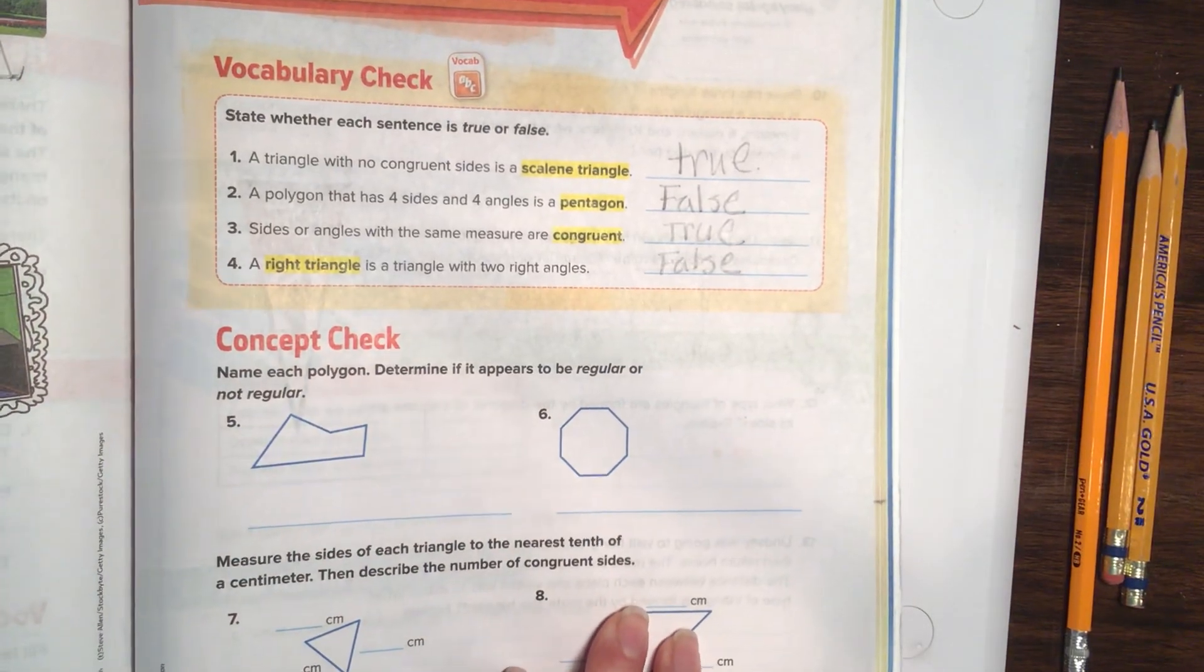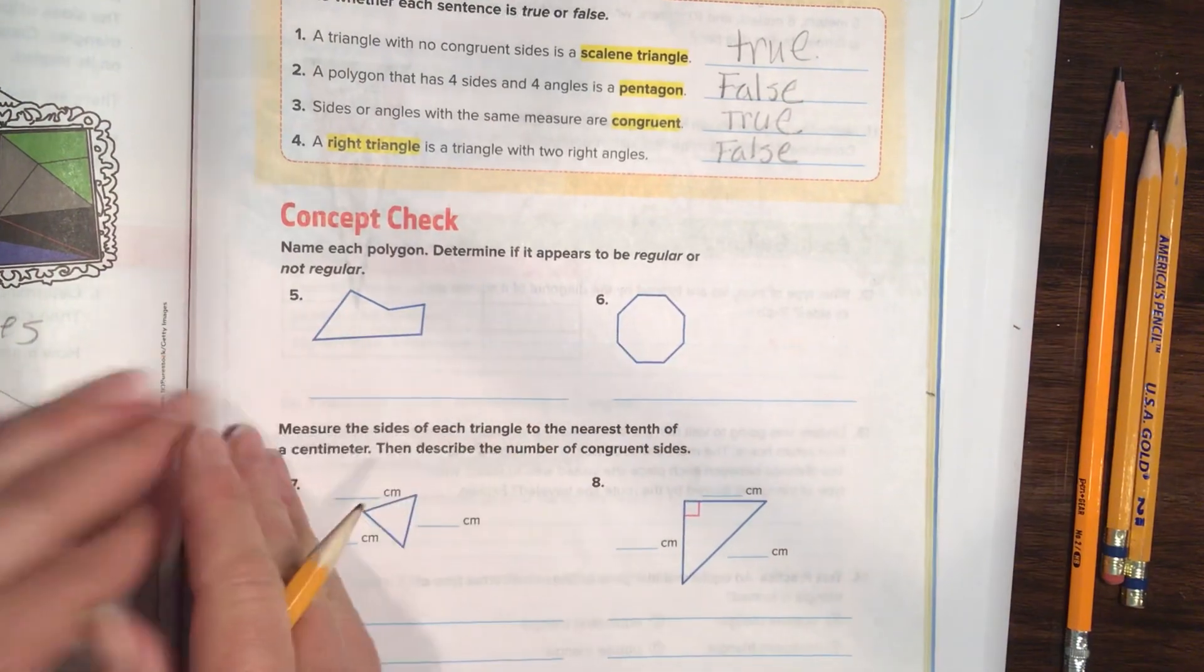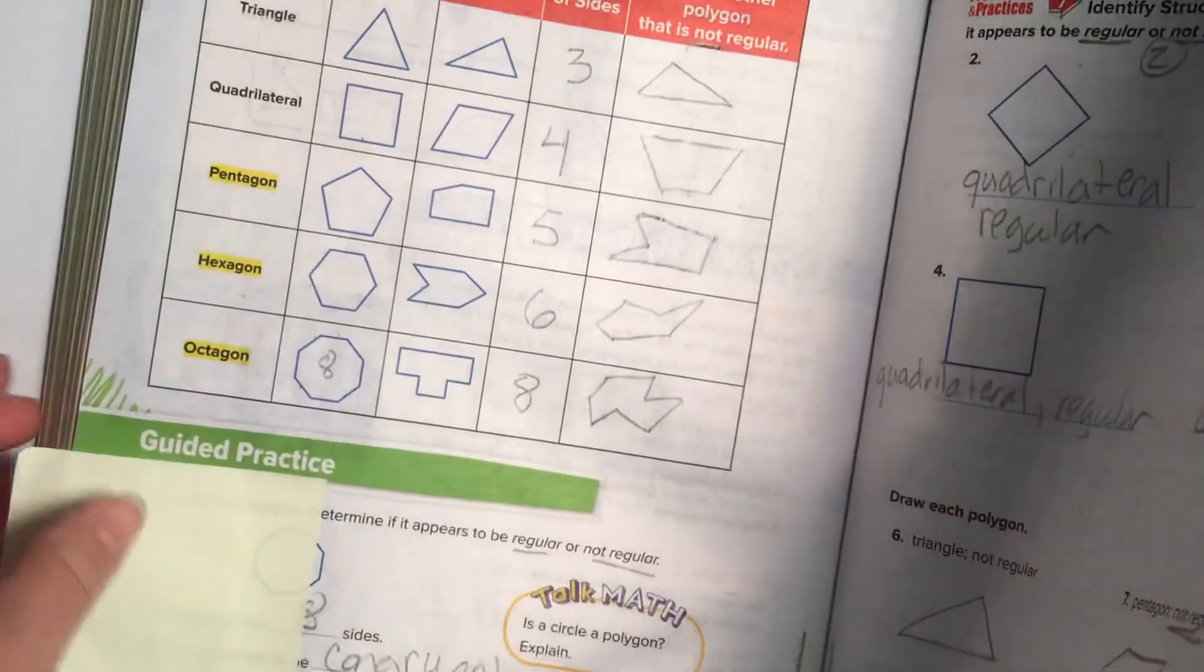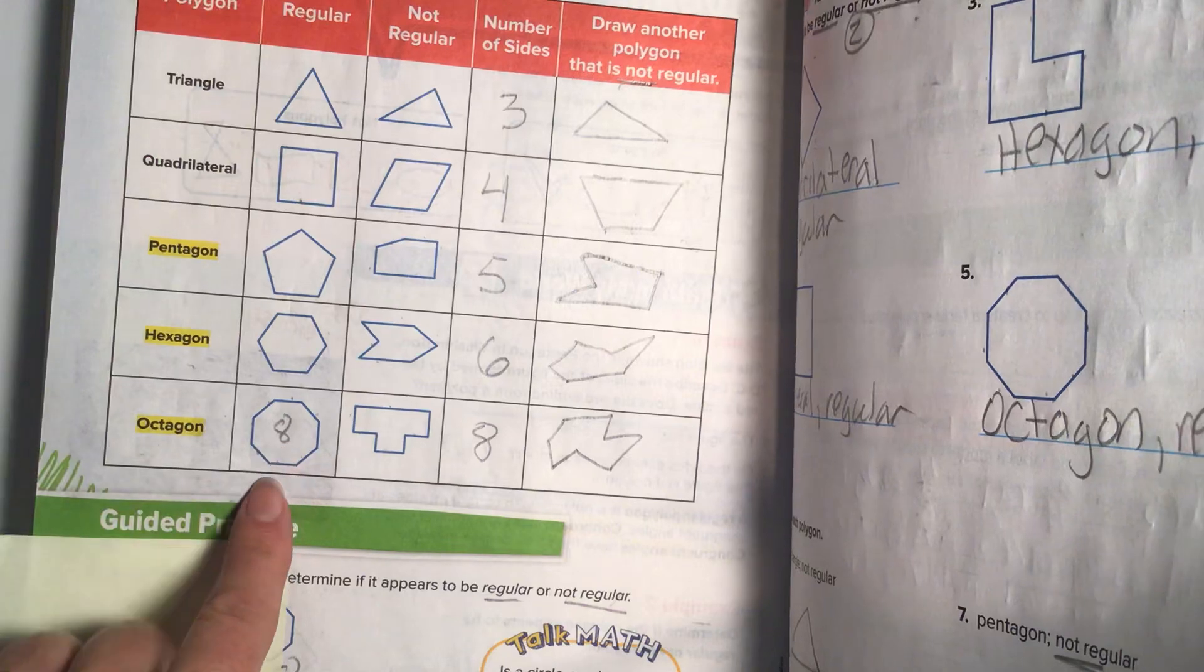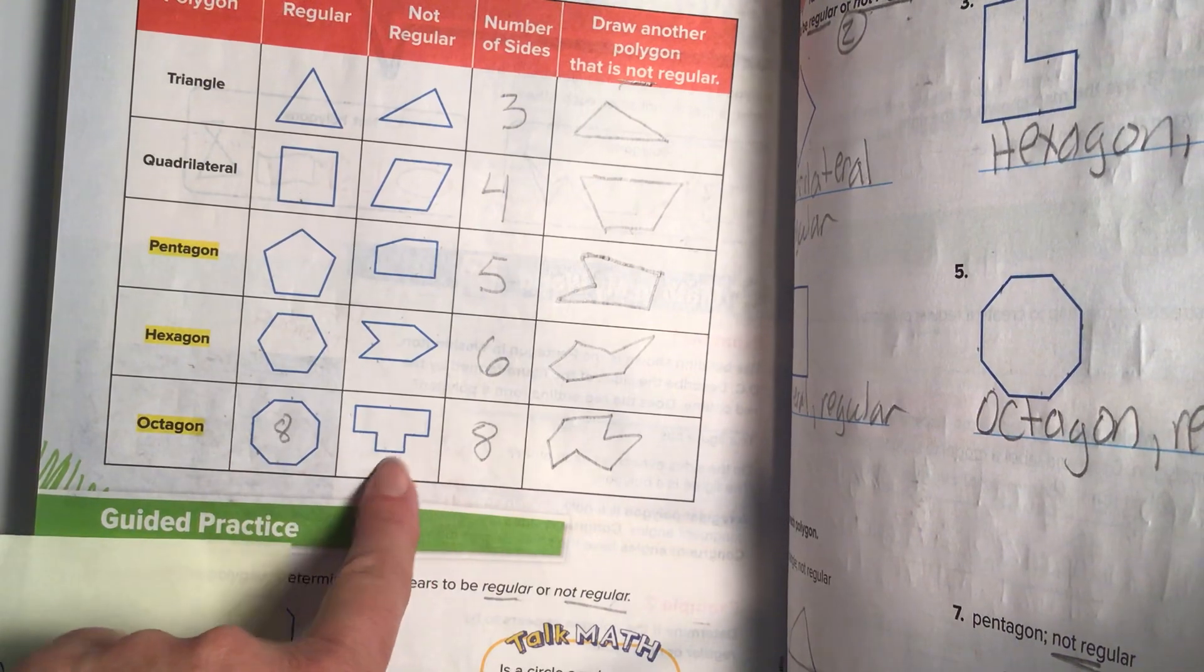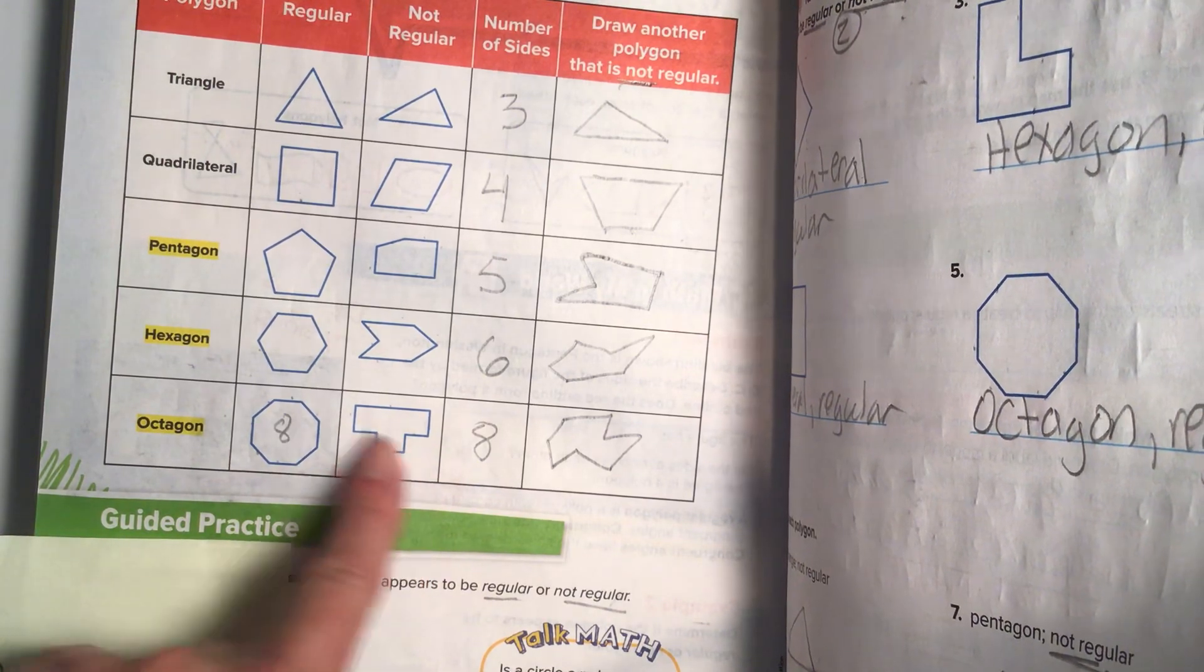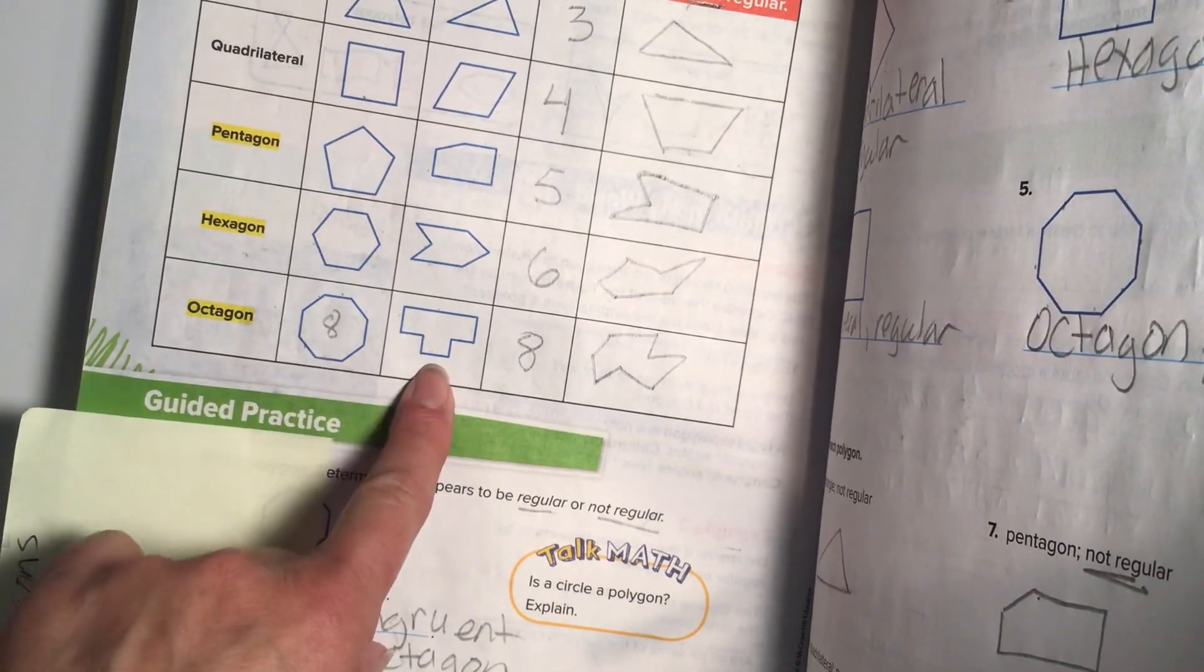Alright, concept check. Name each polygon. Determine if it is to be regular or not regular. Now, just a quick FYI. If it's regular, here's our page on 904. If it's regular, then all of the sides measure the same where they're congruent. See how this one's regular, this one's not regular. Because there are still eight sides here, but they're not congruent. And by the way, yes. Octagon, octagon. Regular, not regular.